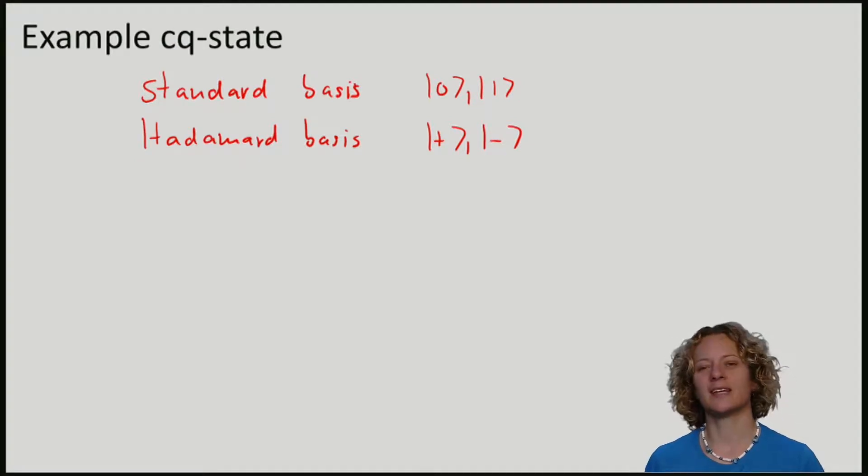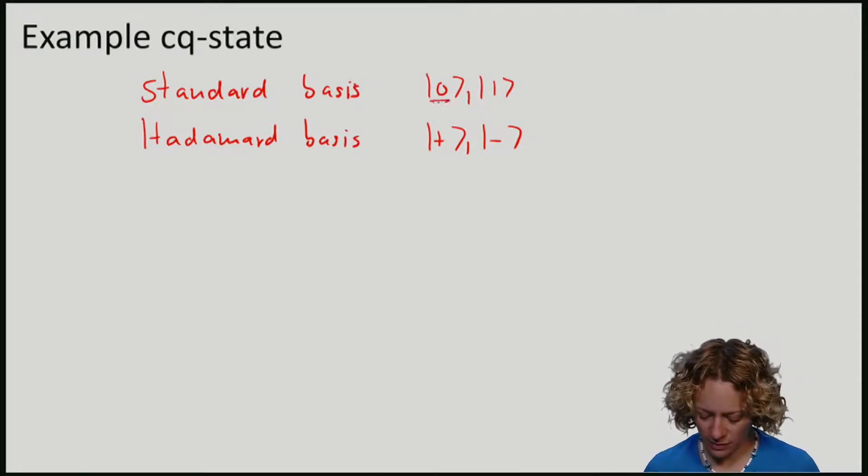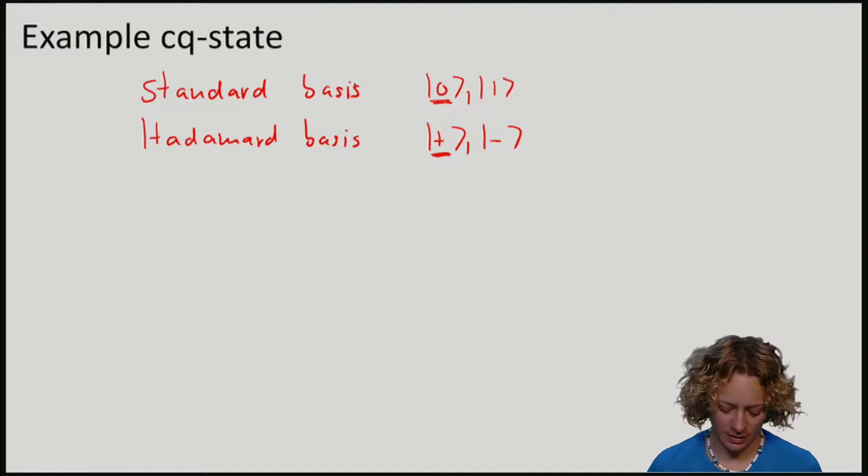Let's imagine now that we first define a density matrix that corresponds to preparing 0 either in the standard basis or in the Hadamard basis. We will associate |+⟩ with 0. This would give me this density matrix.